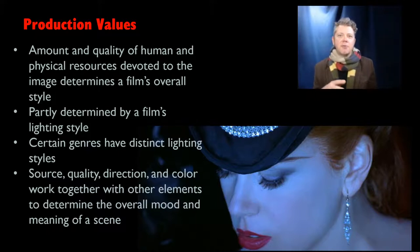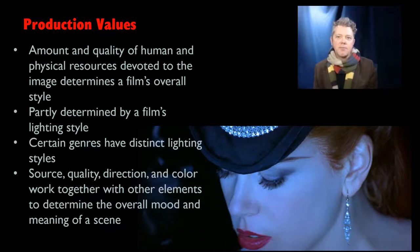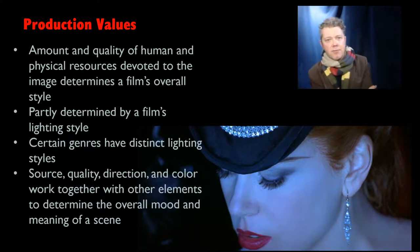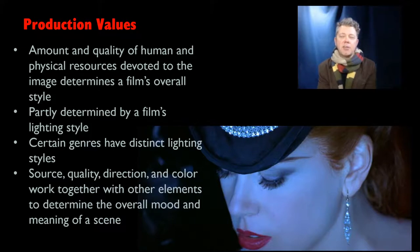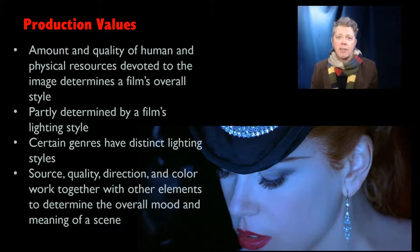Production values — the amount and quality of human and physical resources devoted to the image — determine a film's overall style, partly through its lighting style. Certain genres have distinct lighting styles: we expect horror films to be lit very differently than romantic comedies. Good lighting and good cinematography can make a cheap film incredible. If you want to see a film made on a very tight budget with beautiful mostly-natural lighting, see Gareth Edwards' Monsters — there's some beautiful lighting and camera work in that film.